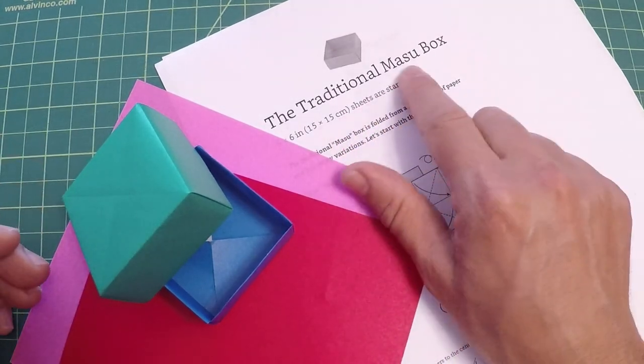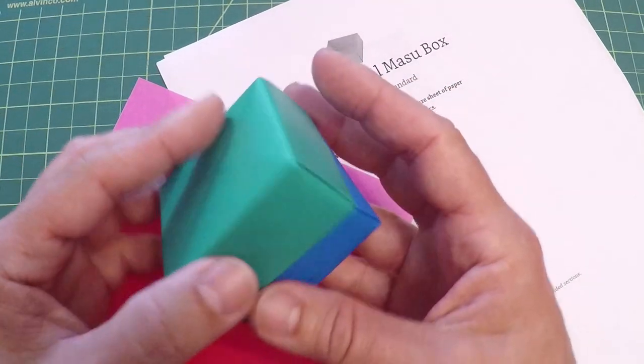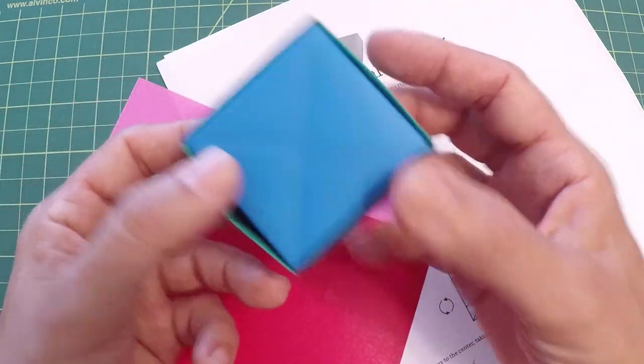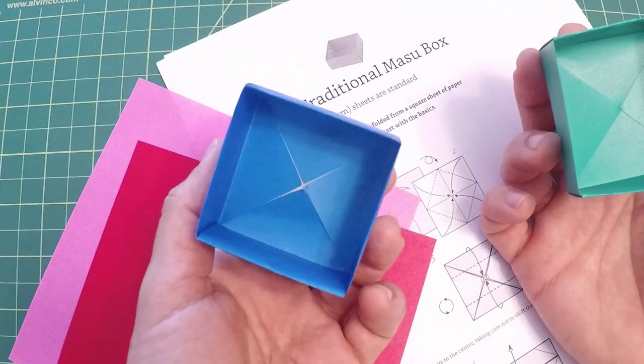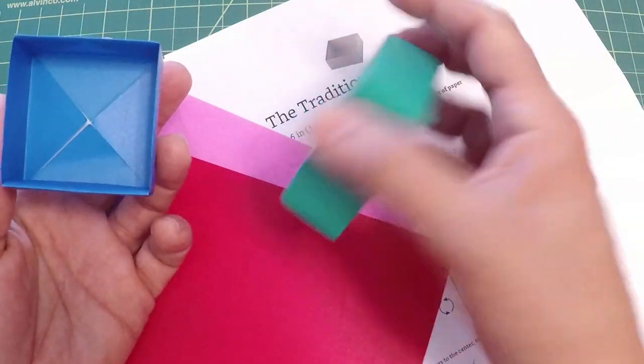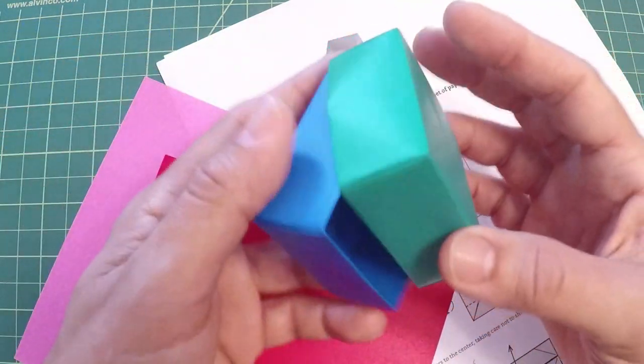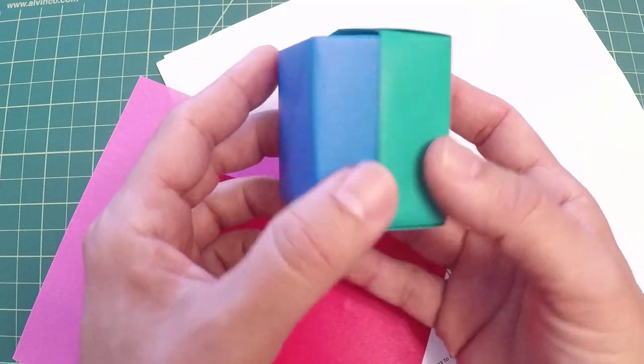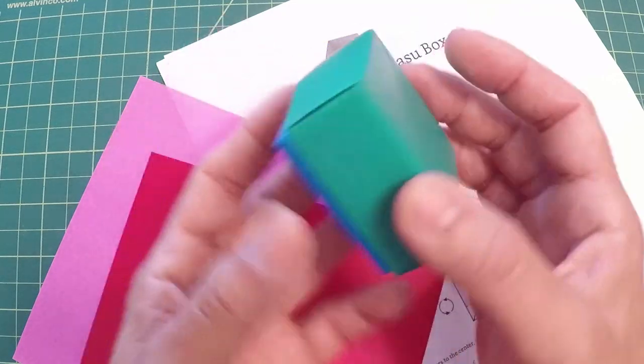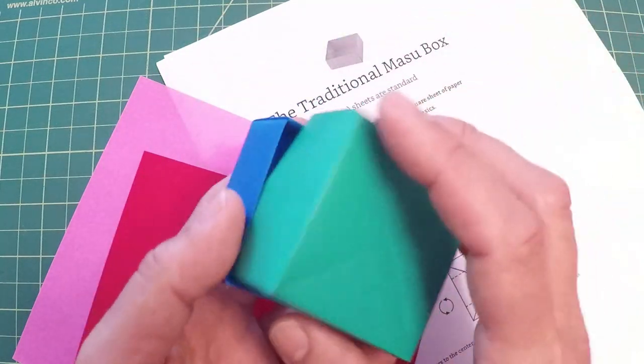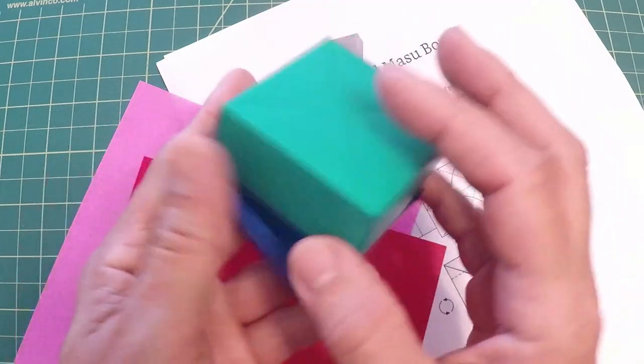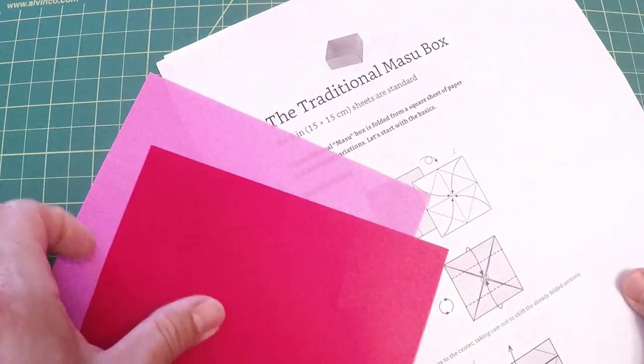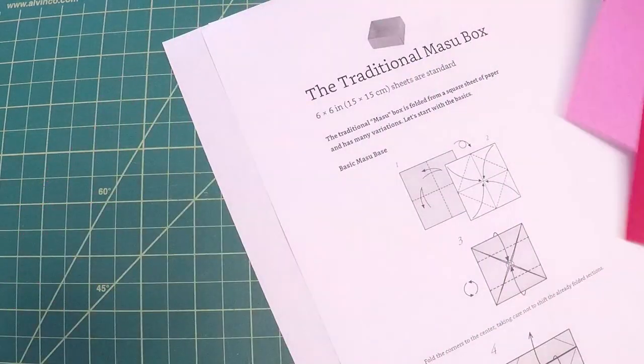Okay, so the traditional Masu box. Here we have the box completed right here out of origami paper, 6 inch by 6 inch. It has the box and the lid, and they go together really nicely. The folds are the same except that for the lid you are going to make a few things that are a little bit different. So let's go ahead and begin.